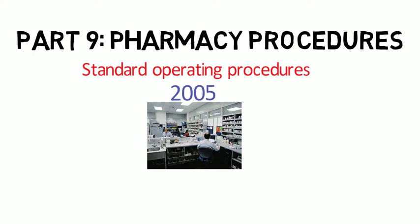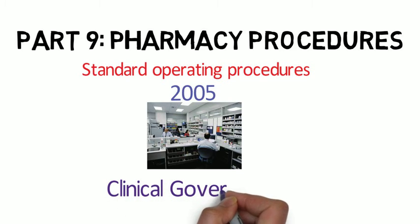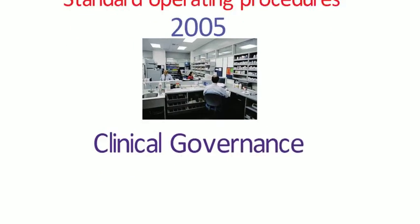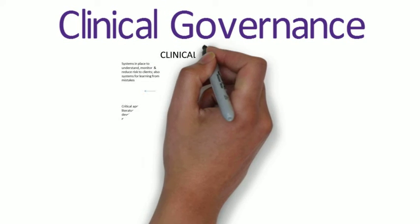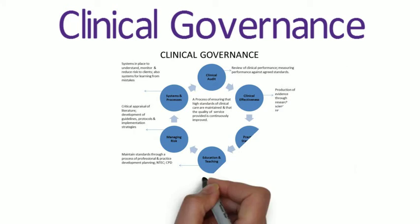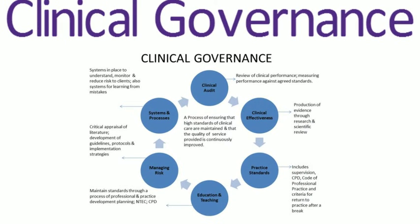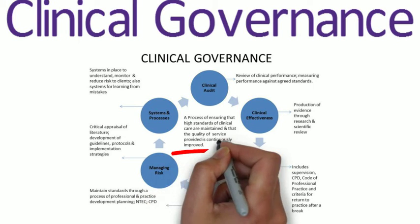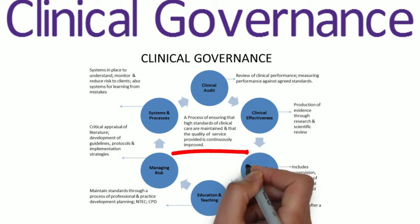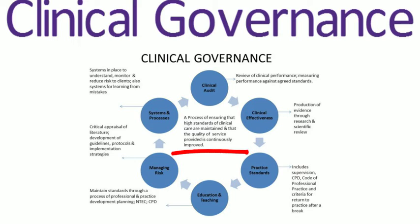Standard operating procedures were introduced to comply with clinical governance requirements. Basically, health professionals are required to put in place strategies for risk management and harm minimisation. The Royal Pharmaceutical Society required that SOPs were in place as part of a process of ensuring clinical governance in a pharmacy setting — that's safeguarding, risk management and harm minimisation. Clinical governance is all about providing the highest quality of service to the patient.